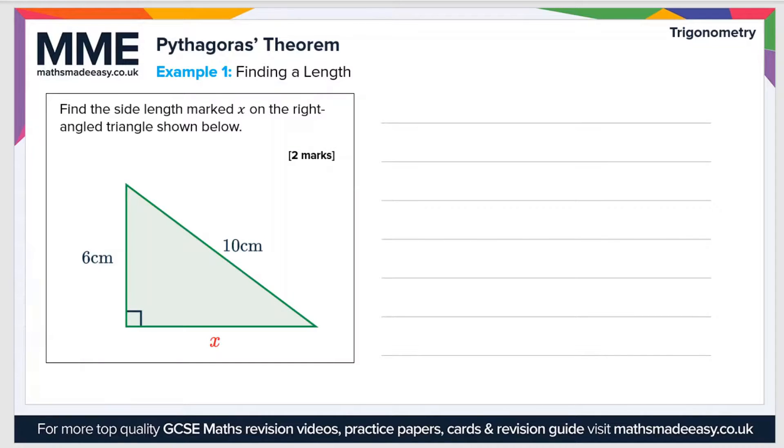Let's have a look at an example question now. Find the side length marked x on the right-angled triangle shown below. Let's first of all just rewrite the expression for Pythagoras' theorem, which is a squared plus b squared equals c squared. Now we just need to identify what is a, what is b, and what is c.